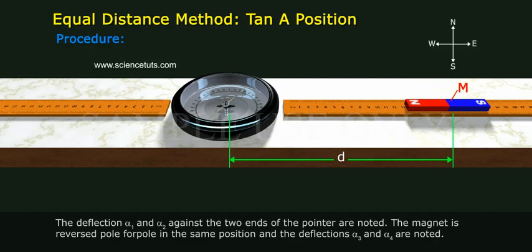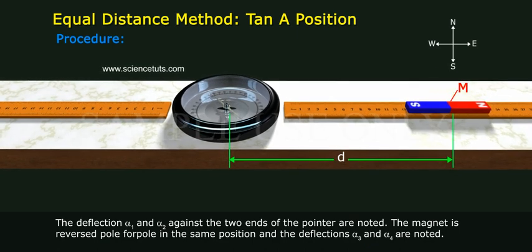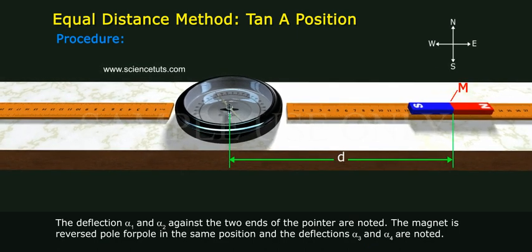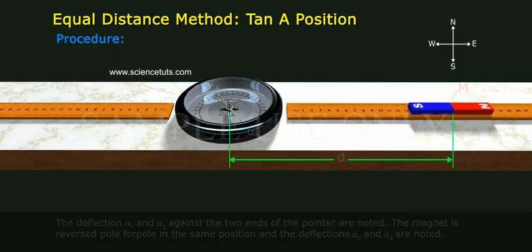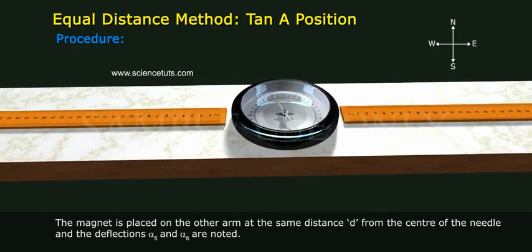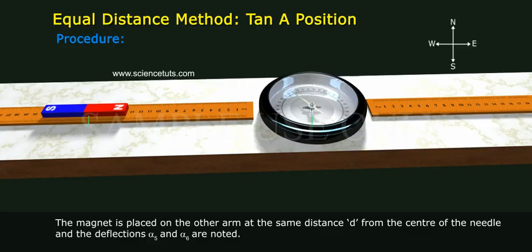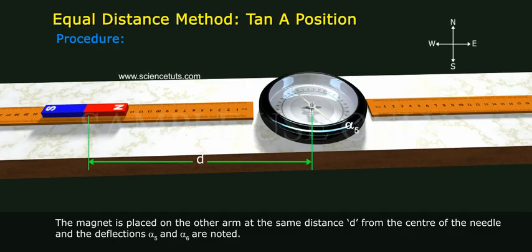The deflections alpha 1 and alpha 2 against the two ends of the pointer are noted. The magnet is reversed pole for pole in the same position and deflections alpha 3 and alpha 4 are noted. The magnet is placed on the other arm at the same distance d from the center of the needle and the deflections alpha 5 and alpha 6 are noted.